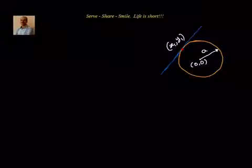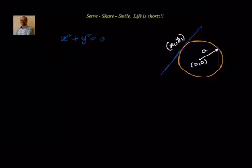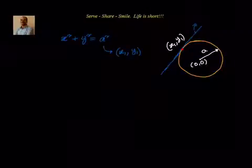Let us take a simple circle equation. We have x² + y² = a² as the circle. We want to find out the equation of the tangent to the circle at a particular point (x1, y1) — that means we want to find out the equation of this particular line.